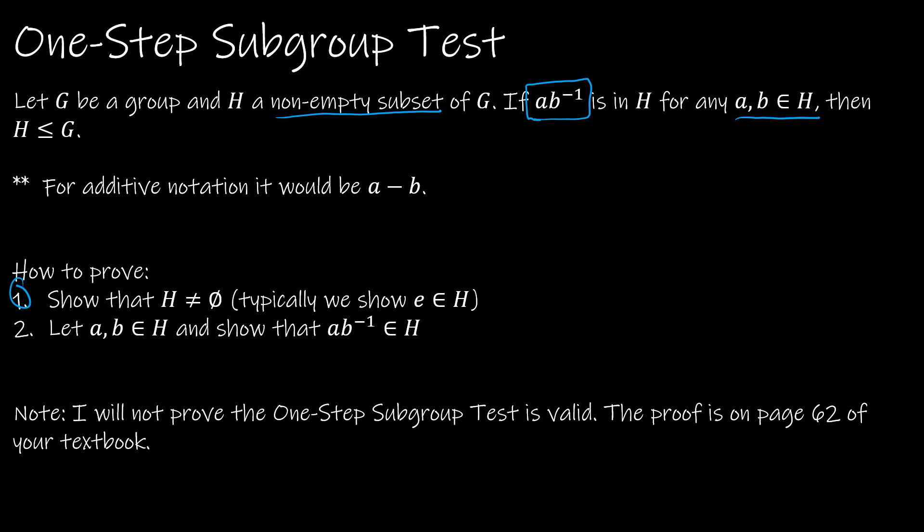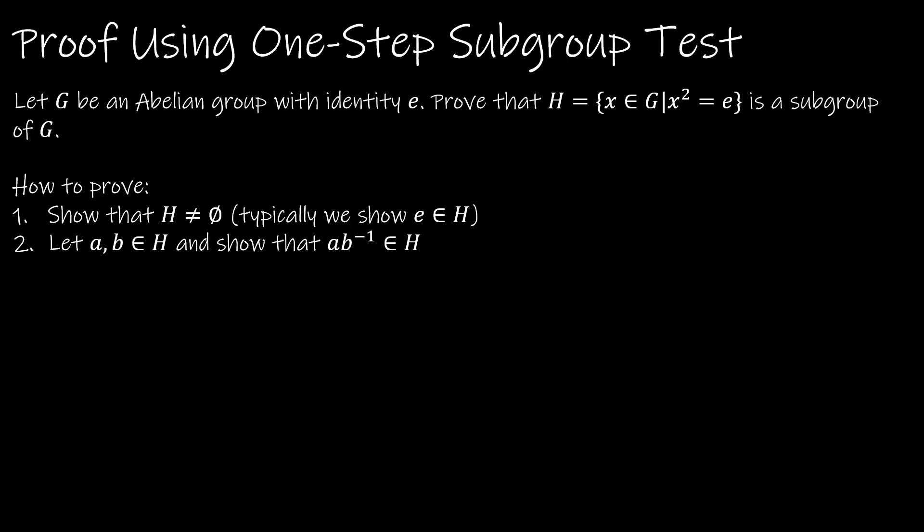I'm not going to go through the validity of the subgroup test — there is a proof in your textbook on page 62 if you'd like to go through that. I wanted to focus more on actually using the subgroup test in a proof. We're going to do a proof using the one-step subgroup test, and I've chosen to do the exact same proof for the one-step test and the two-step test, just so you can see how those proofs are the same and how they differ.